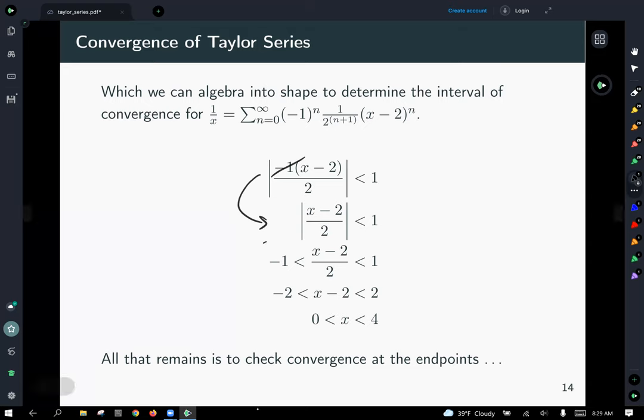So then expanding the inequality, whatever was in the absolute value, we take less than 1 and greater than negative 1. And then we just straightforward multiply both sides by 2, and lastly we add 2 everywhere to arrive at our answer that this thing converges on the interval from 0 to 4.